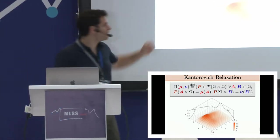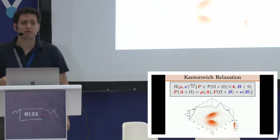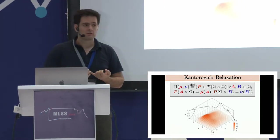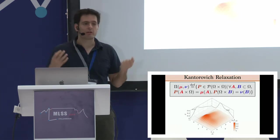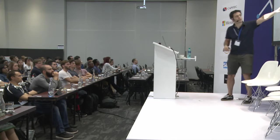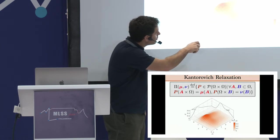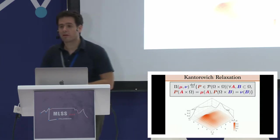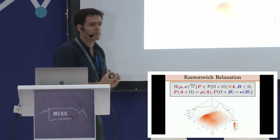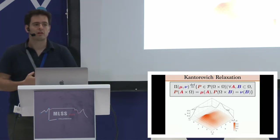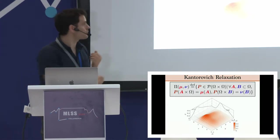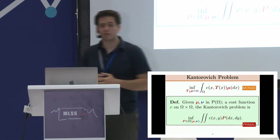There are many couplings satisfying the marginal constraints — there's always at least one. The simplest is the product coupling: p(x,y) = mu(x) · nu(y), i.e., assuming the two random variables are independent. So there will always be at least one coupling — the independent coupling — connecting mu and nu, which is where Kantorovich's point of view enters.